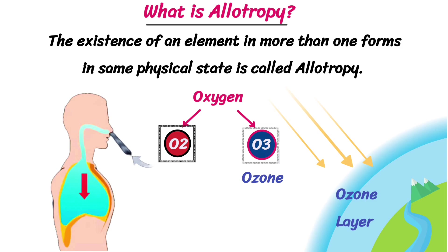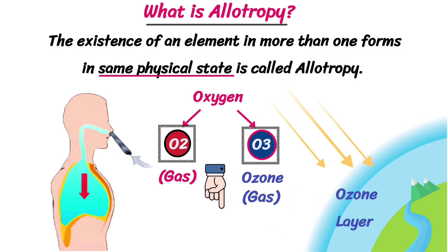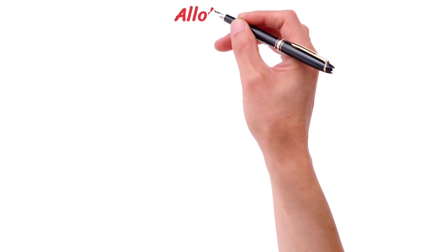Both forms exist in the same physical state, both are gases at room temperature, so known as allotropic forms of same element, but different number of atoms in their molecules.